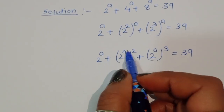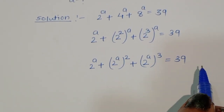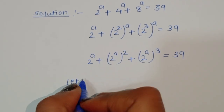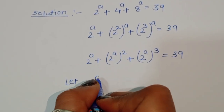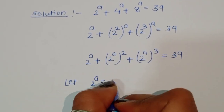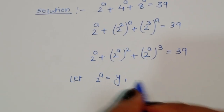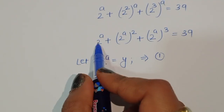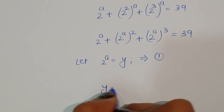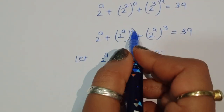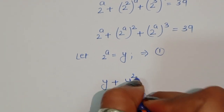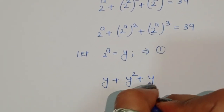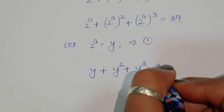You can see 2 power a is common here. So let's consider, to make this equation easy, that 2 power a is equal to y — this is equation number 1. So if 2 power a is equal to y, we can write this as y plus y square plus y cube is equal to 39.